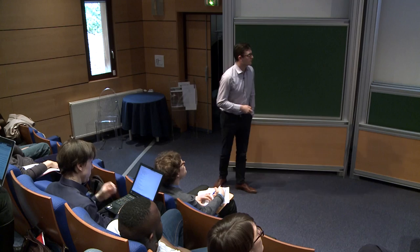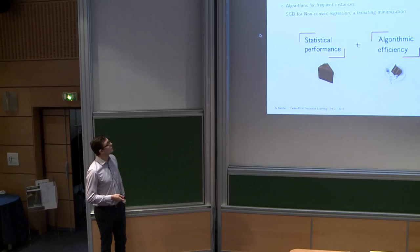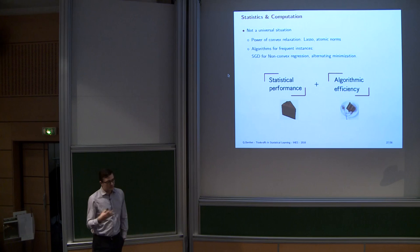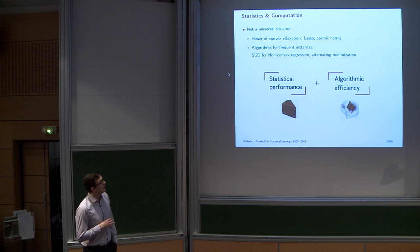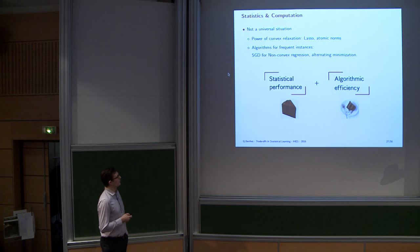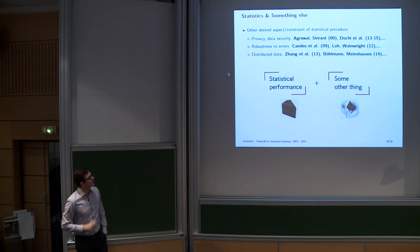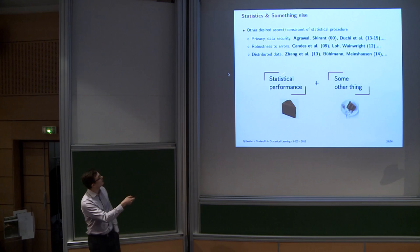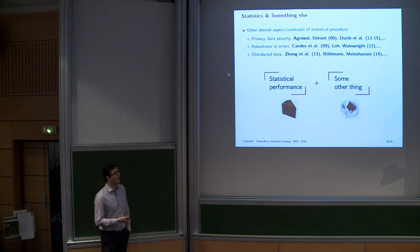This was one particular problem where you cannot have your cake and eat it too. But this is not a universal situation. In the last few decades we've seen the power of convex relaxation in statistics and machine learning. More recently there's been more focus on the fact that a lot of things will work by magic — even if SGD is not supposed to work, it will work, and you can actually prove it works a lot of the time. There are many situations where you can have good statistical performance and algorithmic efficiency simultaneously. Some people have worked on privacy, data security, robustness to errors, and distributed data — showing that you can have statistical performance and some other property while losing only a little bit of statistical performance.